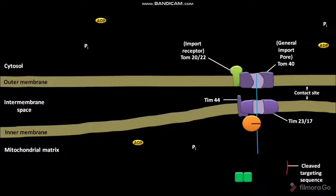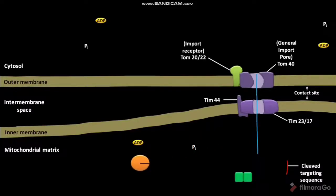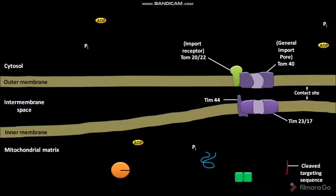After cleavage of the targeting sequence, the hsc70 is released from the newly imported precursor protein. The newly imported precursor protein then folds to form the mature active protein. The folding of some proteins depends on matrix chaperonins.